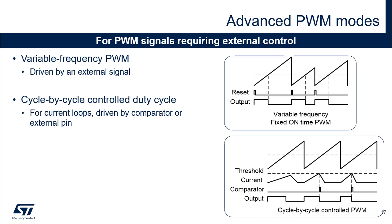In the current controlled PWM mode, a comparator monitors the peak current value into the load. As soon as the current exceeds a programmed threshold, the comparator resets the PWM output, which is then automatically restarted at the next PWM period, thus providing a controlled peak current value.